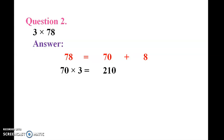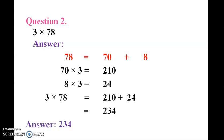So 70 into 3, 8 into 3 is 24. We get the answer.